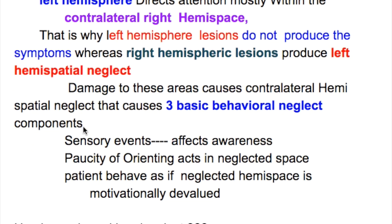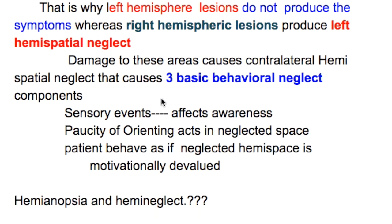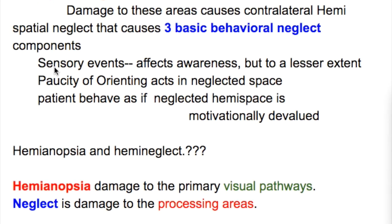The left hemisphere is also concerned with language. Damage to these areas causes contralateral hemispatial neglect, which produces three basic behavioral neglect components: number one, sensory events that affect awareness, but to a lesser extent; number two, paucity of orienting responses in the neglected space; and number three, the patient behaves as if the neglected hemispace is motivationally devalued.